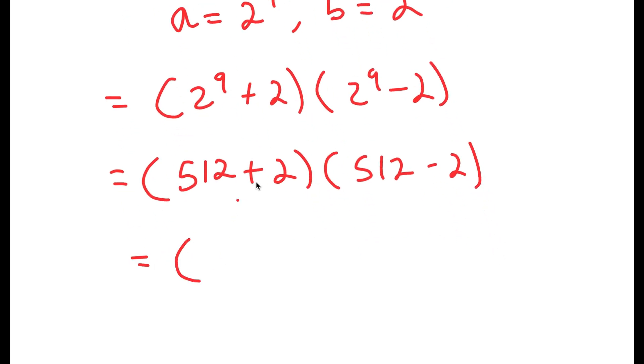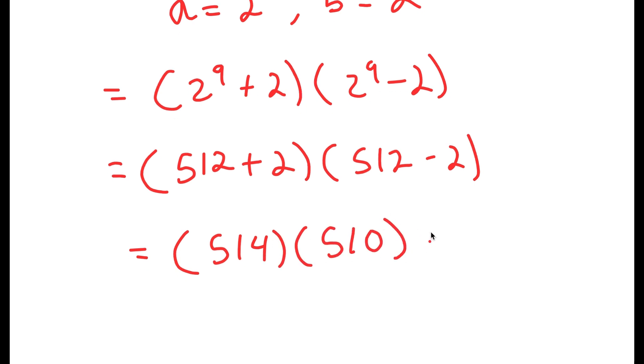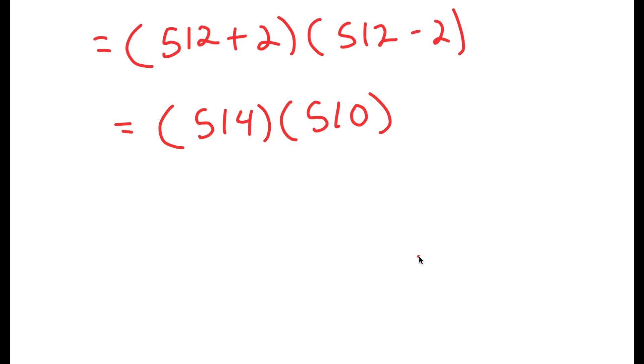So 512 plus 2 is 514 and 512 minus 2 is 510. So I get 514 times 510.